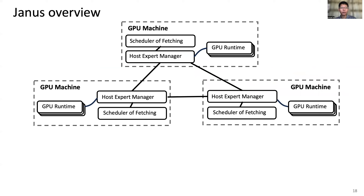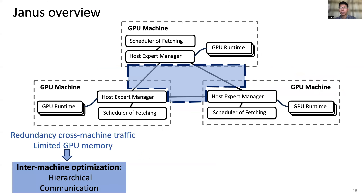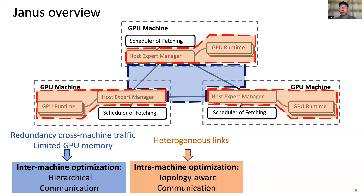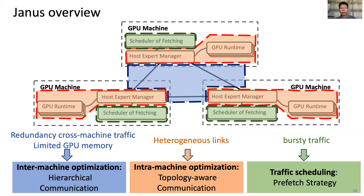The overview of JANUS is as follows. There are many GPU machines in the cluster. First, each GPU machine has a host expert manager, responsible for fetching experts from other machines. With the help of the host expert manager, JANUS designs hierarchical communication for inter-machine optimization. Second, each GPU machine has many GPUs, and the host expert manager sends experts to GPUs frequently. JANUS designs topology-aware communication for intra-machine optimization. Third, each GPU machine also has a scheduler for prefetching, and JANUS designs prefetch strategies for traffic scheduling.